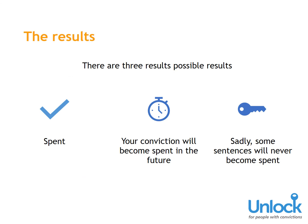The Results: Your results will now appear on the screen. Your conviction may already be spent. If not, you'll be given the date on which your conviction will become spent. Sadly, in some cases, it will never become spent. If you're unsure what the results mean, then you can always give the Unlock Helpline a call.